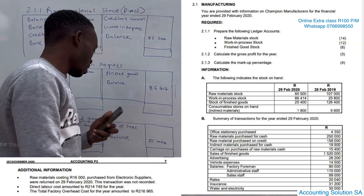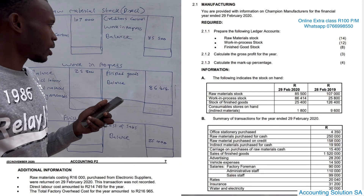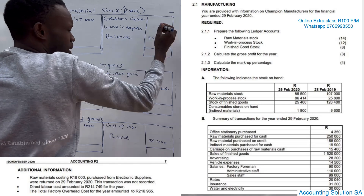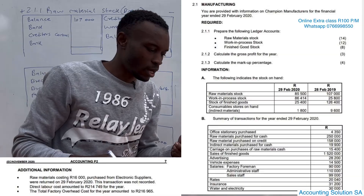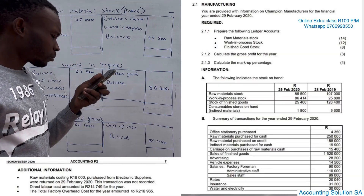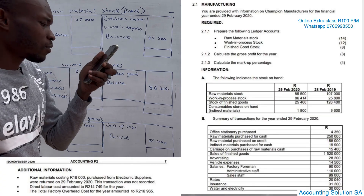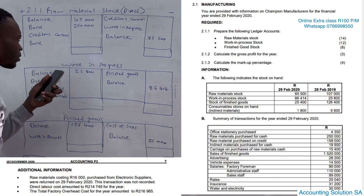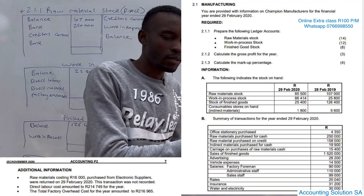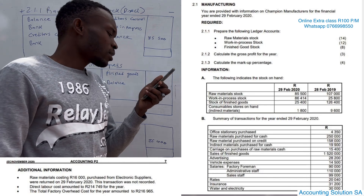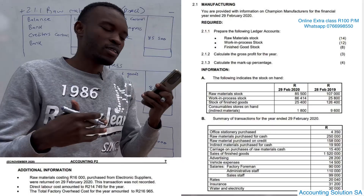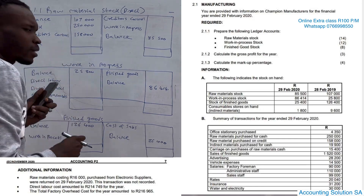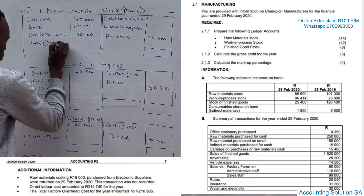Now we are done with opening and closing, we have to fill the raw material account. Remember when we buy we record on this side, when we return we record on that side. This side is for adding - it's a plus. This side is minus - it's like an asset account, increase on the debit and decrease on the credit. Raw material purchased for cash - for cash you must write bank - it's going to be 250,000. Bank represents money that goes out or comes in. Raw material purchased on credit is creditors control - it's a liability because we haven't yet paid - 158,000, which is going to add to raw material.